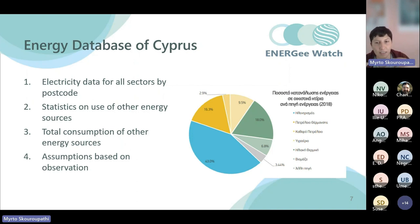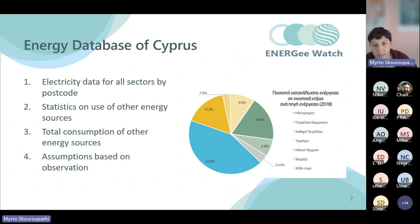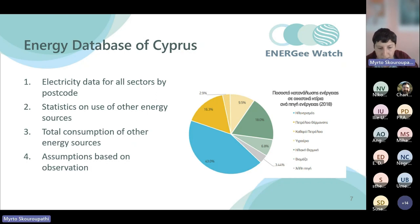This is how the energy database is built — using hard data, statistics, measurements, and some assumptions. A large portion of the assumptions involve transport. We have data on diesel and gasoline bought each year in Cyprus, and then we use weighted averages based on population in each municipality. It's not 100% accurate, but it's the closest we could get, since there are no national sensors to count the actual vehicles passing through a municipality.